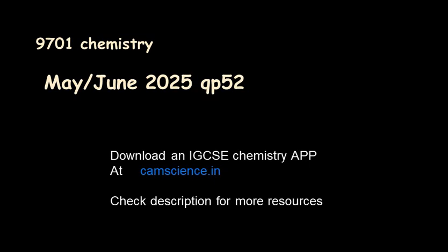In this video, we are going to discuss question 2 of the question paper 5-2 of 9701 chemistry, that is A-levels chemistry, of the examination series May-June 2025. Question 1 is already solved in our earlier video, so let's go ahead with question 2 now.